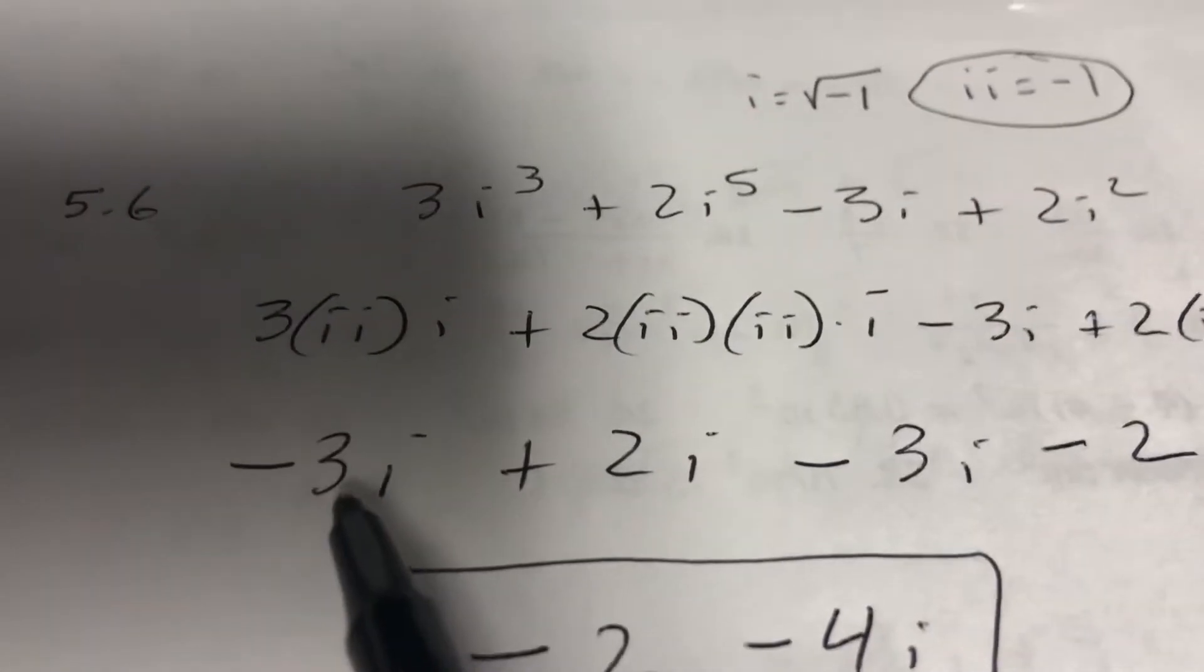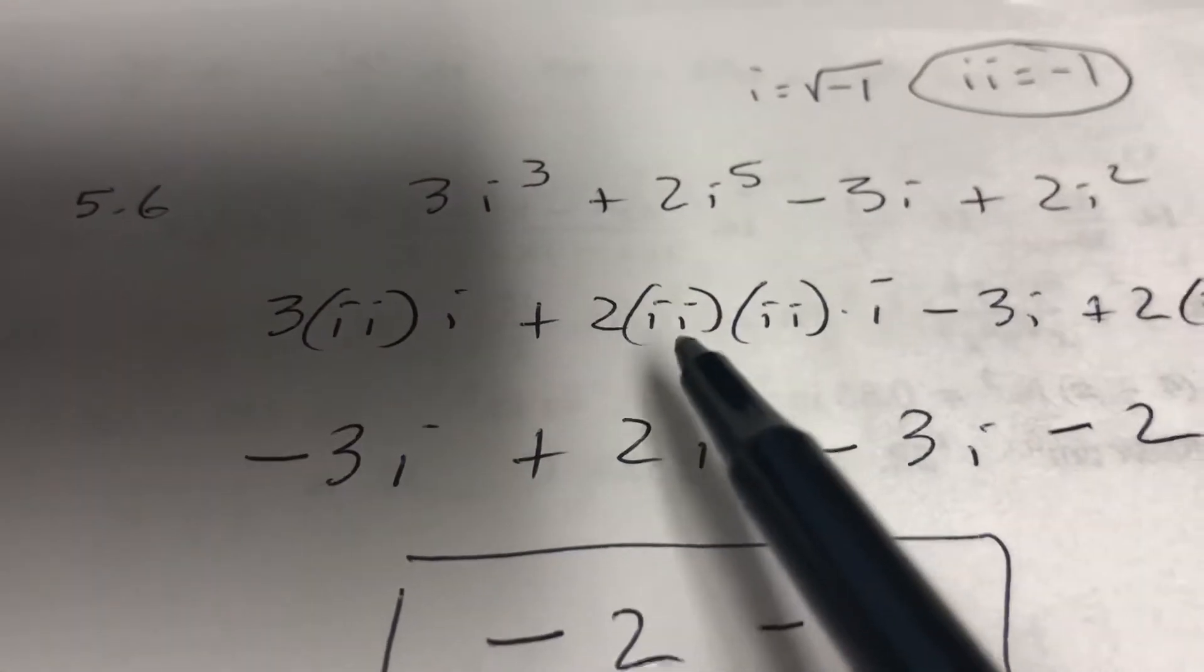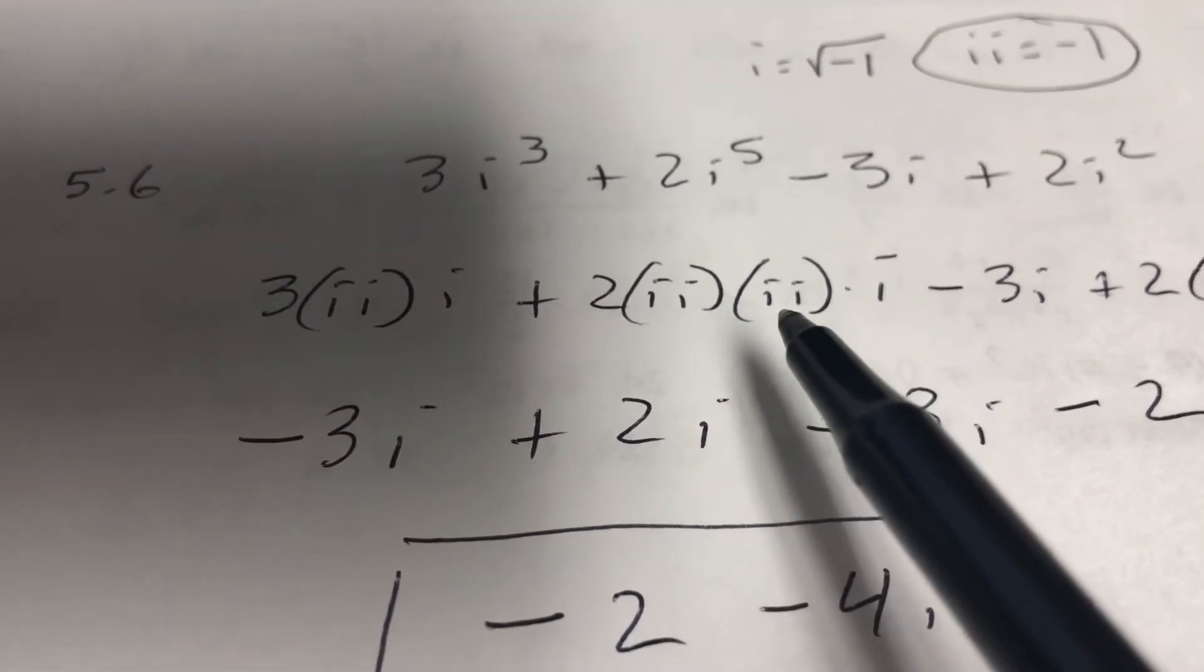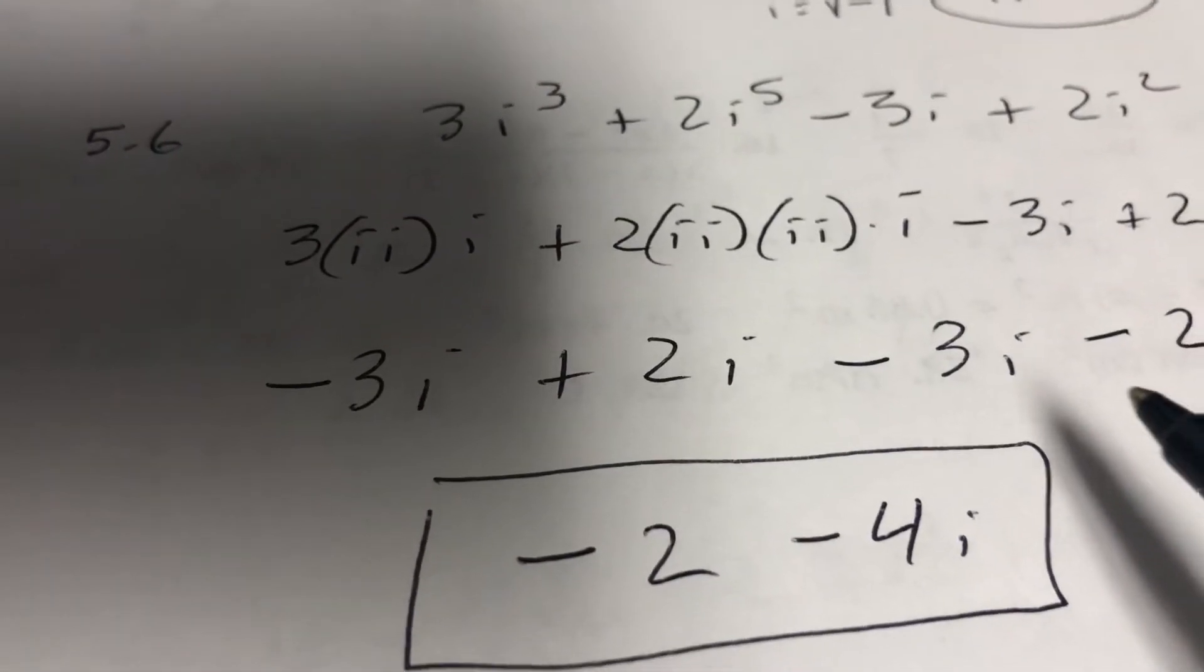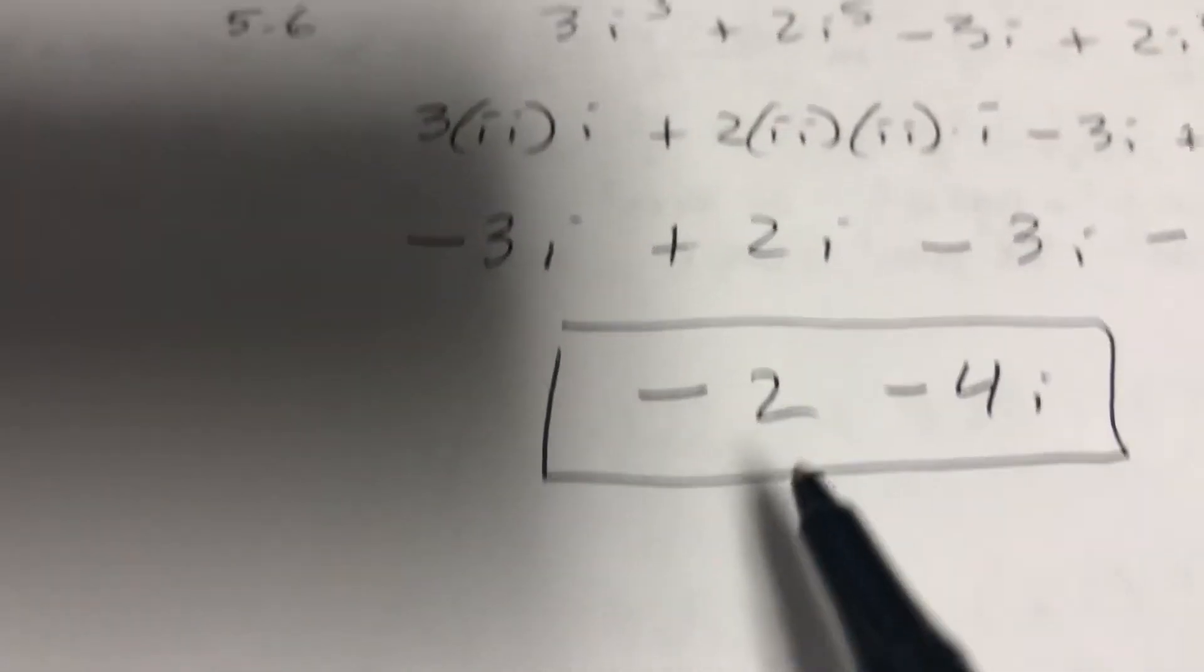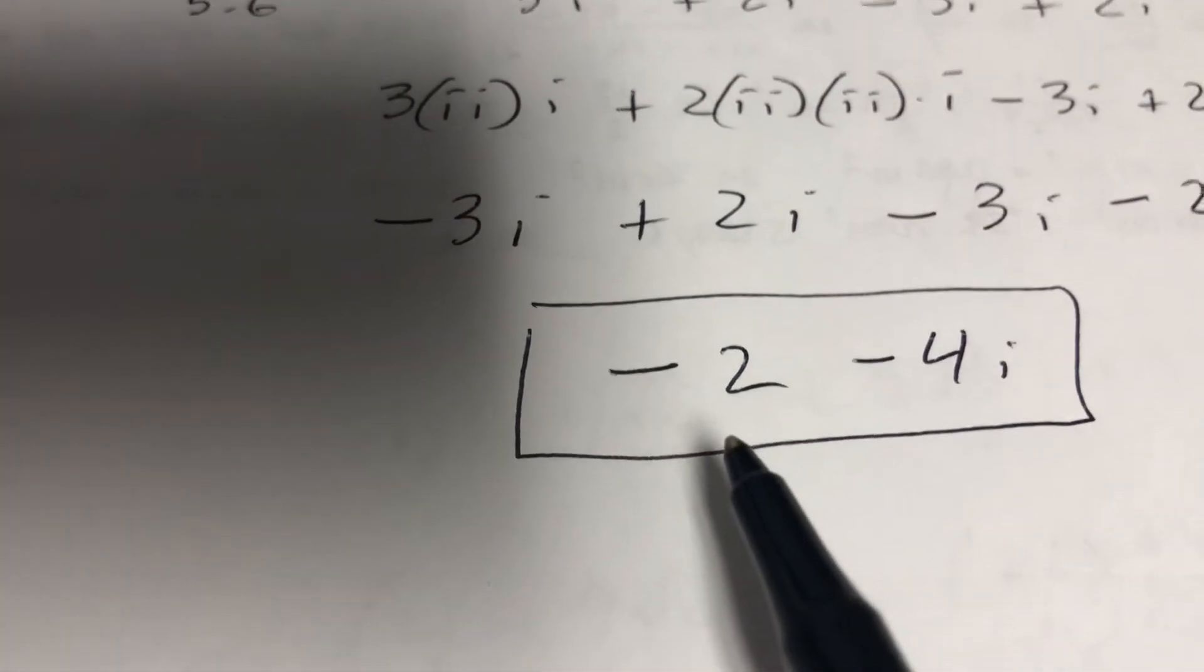So when I simplify I get -3i. Negative 1 times negative 1 is 1 times 2i minus 3i minus 2. And then I always put the real part first - the part without the i - you should put the real part first.